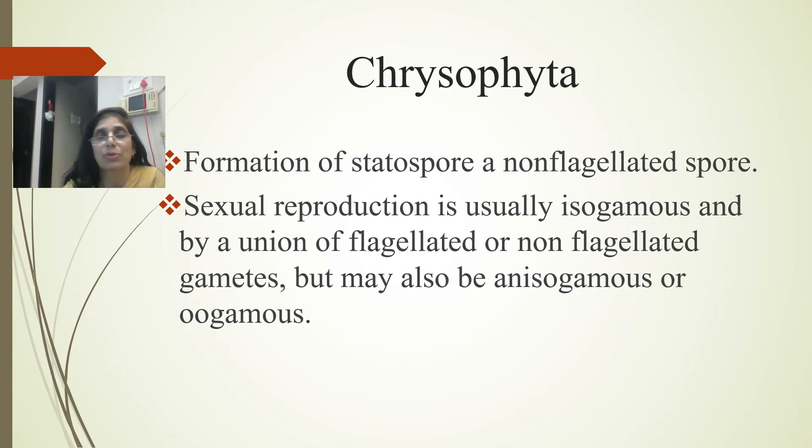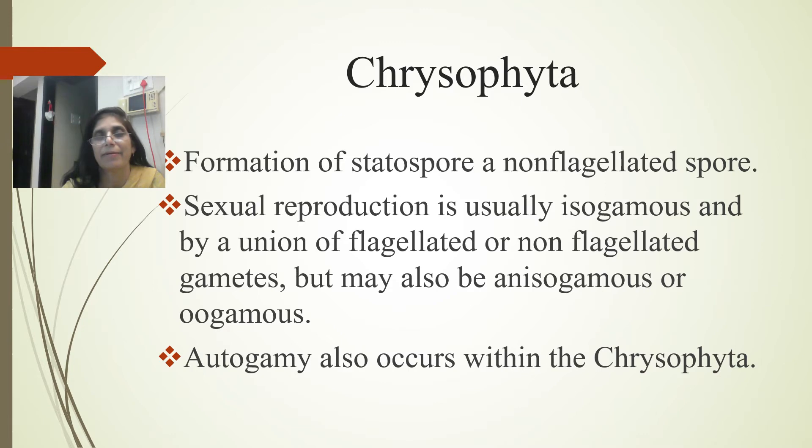Sexual reproduction is usually isogamous and by union of either flagellated or non-flagellated gametes. It may also be anisogamous or oogamous. In this group of algae you have a special type of reproduction called autogamy.